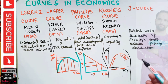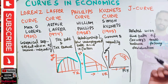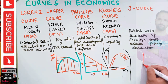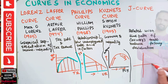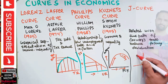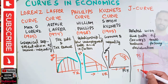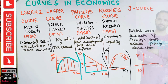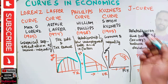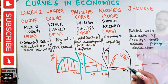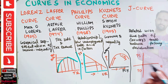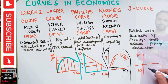Then we have the J-curve, which is related to the time path of a country's trade balance following devaluation or depreciation. The graph shows trade surplus and trade deficit on one axis and time on the other axis.